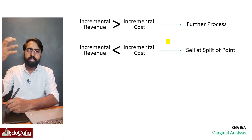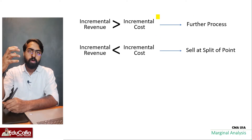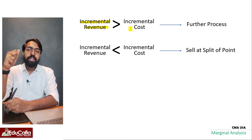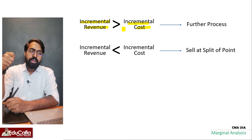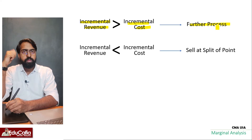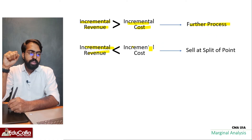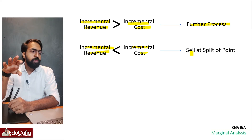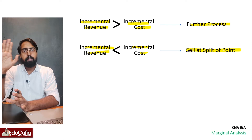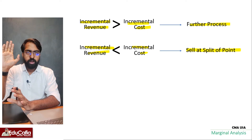By processing further, we get extra — incremental — revenue, but we also incur incremental costs. If the incremental revenue exceeds the incremental cost, we process further. Otherwise, we sell at the split-off point.